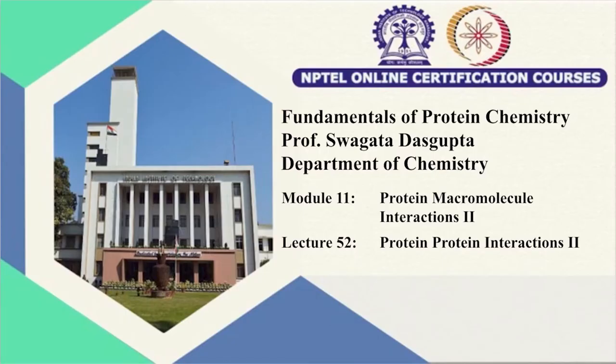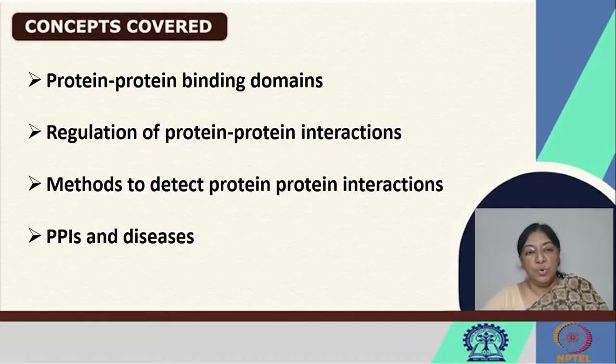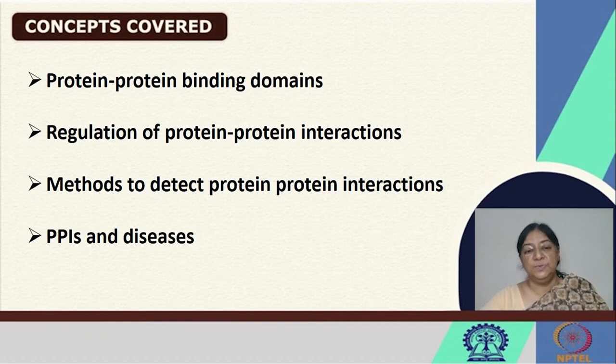We continue our discussion on protein-protein interactions, where we have looked at the geometric and chemical complementarity of these interactions in the previous lecture. In this lecture, we will be looking at protein-protein domains, the regulation of these protein-protein interactions, a specific method to detect these protein interactions, and how the PPIs and diseases are related.